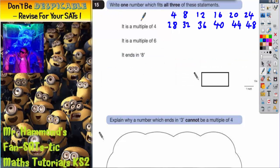Question 15: write one number which fits all three of these statements. So it's got to be a multiple of four, which we've written out the four times table here already. It's got to be a multiple of six, and it's got to end in eight. Now there's no point writing out the four times table, the six times table, and all the numbers that end in eight. We might as well filter out the ones that we've got already.